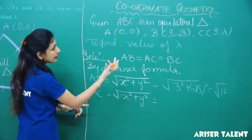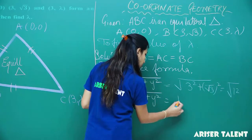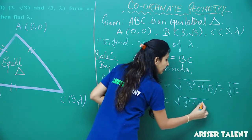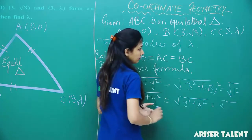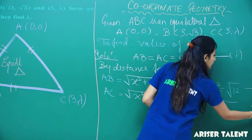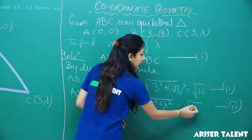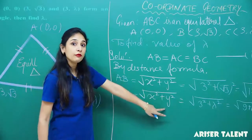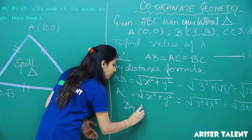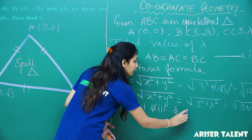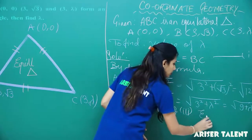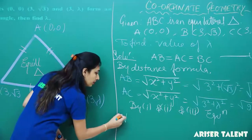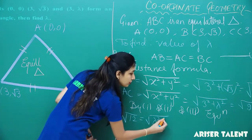For AC, since C is (3, λ), AC = √(3² + λ²) = √(9 + λ²). By the equilateral triangle condition, AB = AC = BC, which gives us √12 = √(λ² + 9).